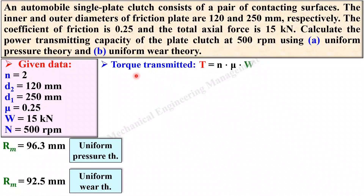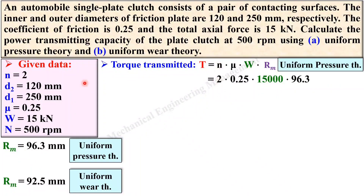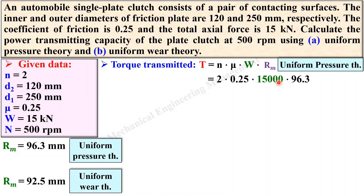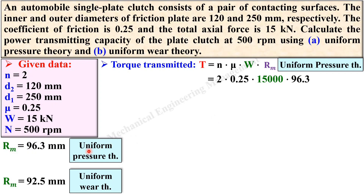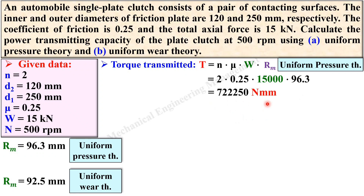Once you have r_m you can find the torque. First, find torque using the uniform pressure theory. Put the values: n = 2, μ = 0.25, W = 15,000 N (keep in mind to always use Newtons, not kilonewtons), and r_m = 96.3 mm. Simplify to get the torque in N·mm, then convert to N·m by dividing by 1000. This is the torque by uniform pressure theory.